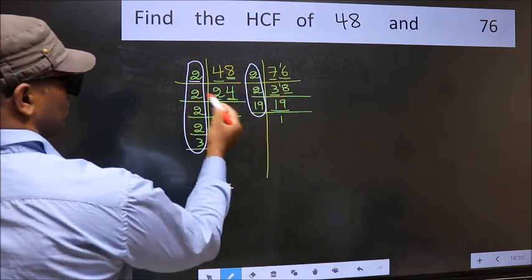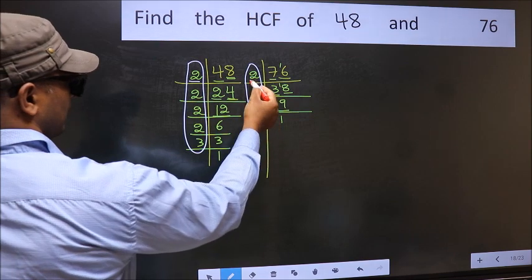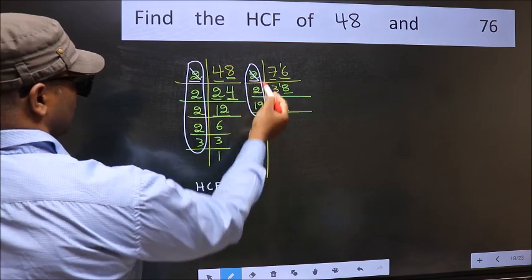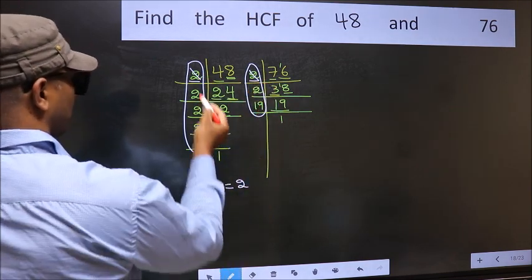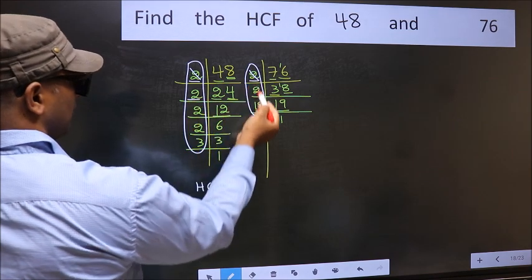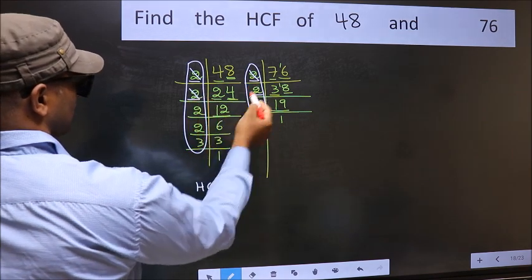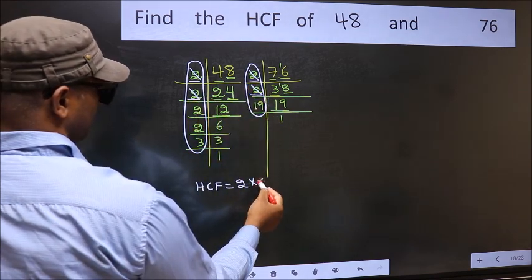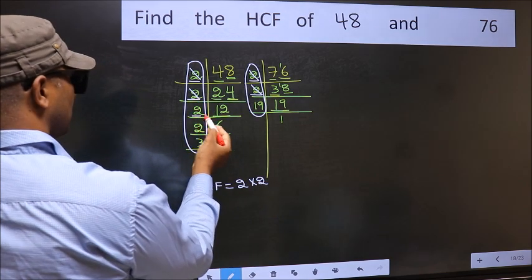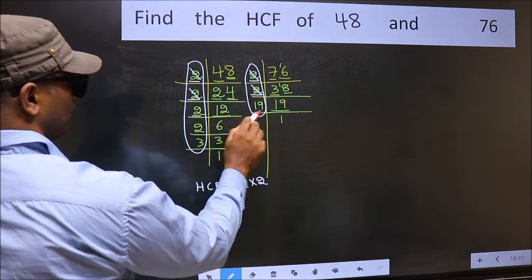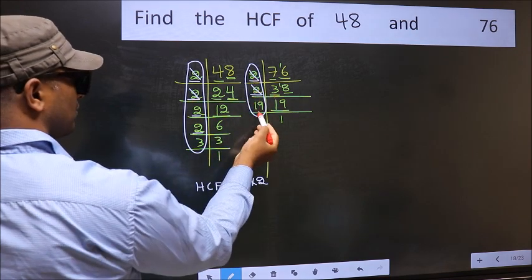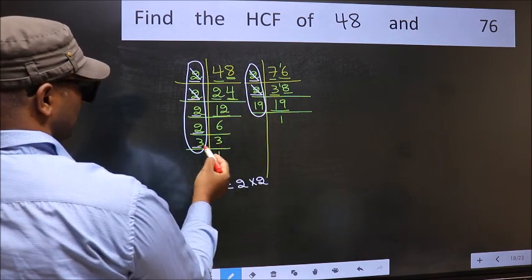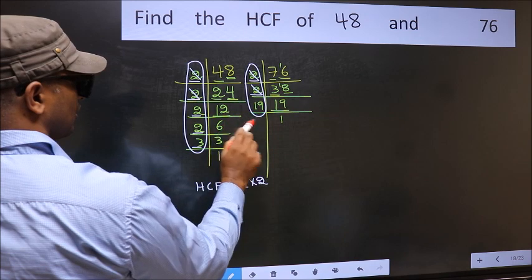Starting with the number 2. Do we have 2 here? Yes. So cut 2 right here. Next number 2. Do we have 2 here? No. Next number 2. Do we have 2 here? No. Next number 3. Do we have 3 here? No.